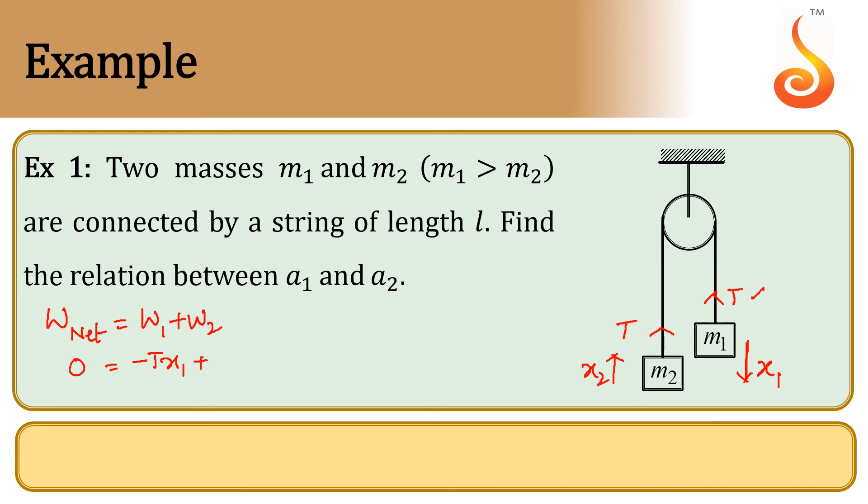For the second body, force and displacement are in the same direction, so it is positive work. So, T into X2. So what we get? TX1 is equal to TX2. T gets cancelled.